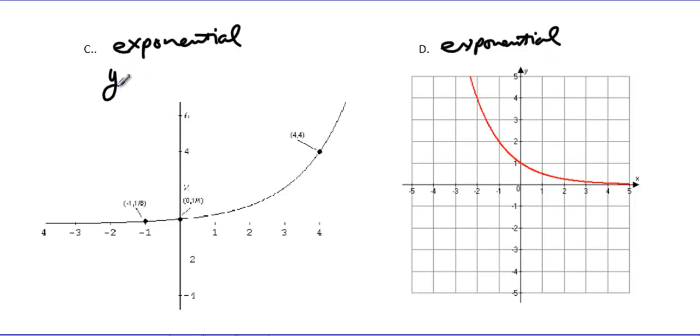Which once again means we're going to say y equals a times b to the x. a is that initial starting value when x is 0. When I look here, it may be hard to see, that says 1/4. So I know right from the start I have 1/4 times some constant factor to the x power. Now, this is a growth equation because it's clearly going up from left to right. So I'm expecting a number bigger than 1.